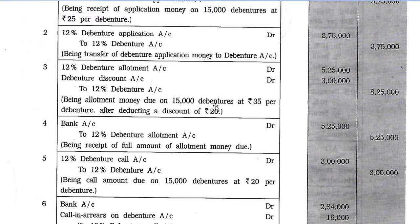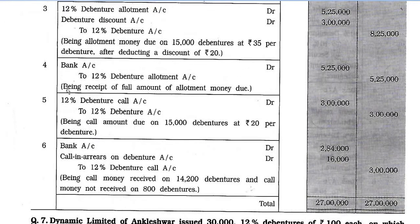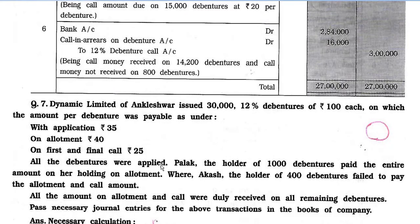Being allotment money due on 15,000 debentures at Rs. 35 per debenture after deducting discount of Rs. 20. Entry 4: Bank account debit Rs. 5,25,000 to 9% Debenture Allotment account Rs. 5,25,000 — being receipt of full allotment money. Entry 5: 9% Debenture Call account debit Rs. 3,00,000 to 9% Debenture account Rs. 3,00,000 — being call amount due on 15,000 debentures at Rs. 20 per debenture. Entry 6: Bank account debit Rs. 2,84,000, Call-in-Arrears on Debenture account debit Rs. 16,000 to 9% Debenture Call account Rs. 3,00,000 — being call money received on 14,200 debentures and not received on 800 debentures.